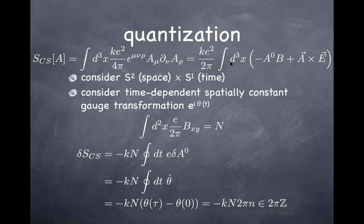Because θ doesn't depend on space, the spatial integral is just the integral of the magnetic field, which turns into the integer N. So the gauge variation of the Chern-Simons term becomes: k (the overall coefficient), times one factor of e eaten by the magnetic field giving the integer N, times the remaining factor of e together with the change in A-naught — the only thing left in the time integral. The change in the scalar potential is θ-dot under gauge transformation, giving another factor of e. So N times the time integral of θ-dot over the time interval τ gives N times (θ(τ) − θ(0)).